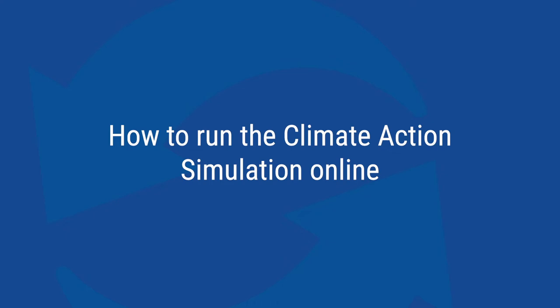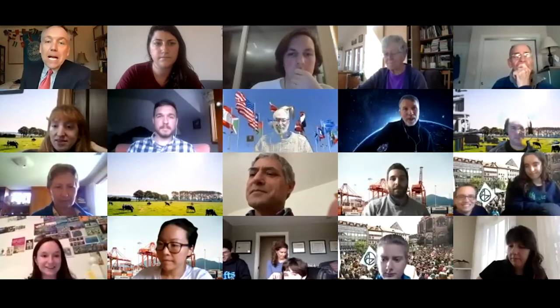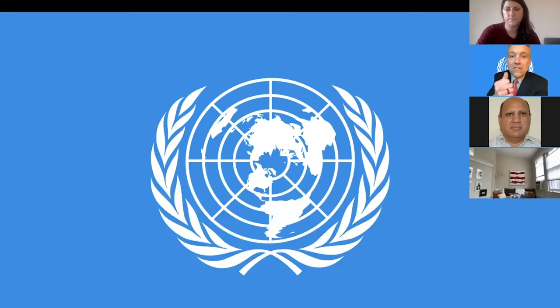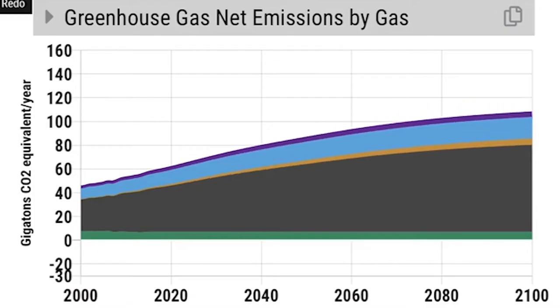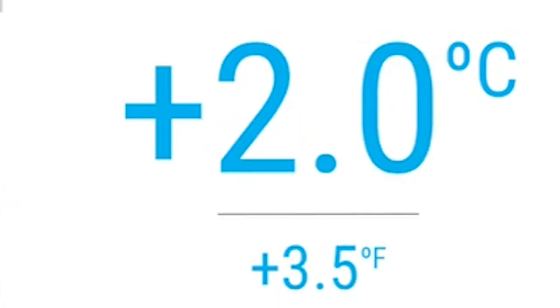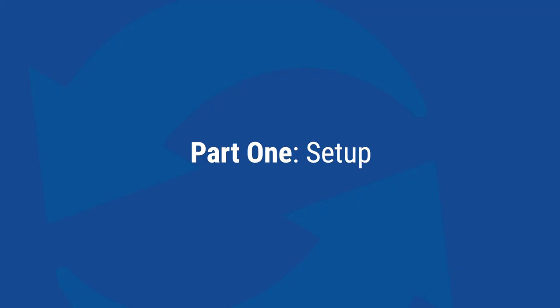The Climate Action Simulation is an interactive role-playing group experience which can be run online or in person. Participants act as multi-sector stakeholders striving to negotiate a plan to limit global warming below 2 degrees Celsius. The simulation uses the En-ROADS simulator, a tool which allows participants to visualize the impacts of technology and policy solutions for addressing climate change, and delivers key insights on climate science and system dynamics.